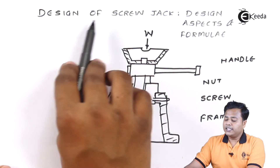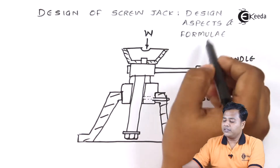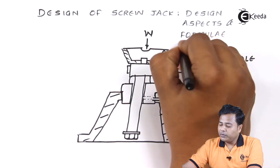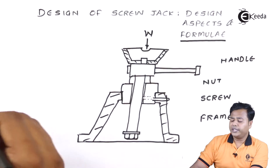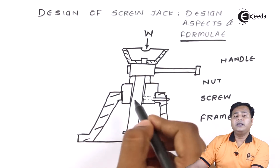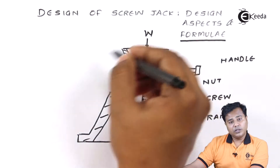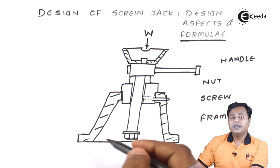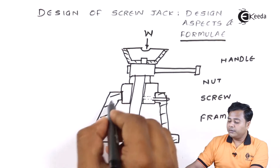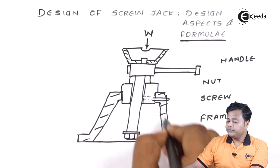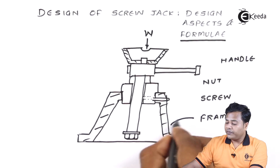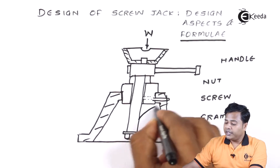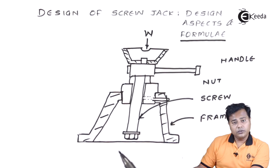So it's the design of screw jack — design aspects and formulae, basically formulae, we are going to look at. Let's quickly revise. This is how the diagram was — this is the cross section of the screw jack, where this is the main body, which they call the frame. Then this is the main hero of our design, that is the screw.